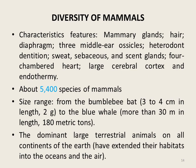Heterodont dentition means that class members possess more than a single tooth morphology — their teeth have been differentiated into different forms: incisors, canines, premolars, and molars.